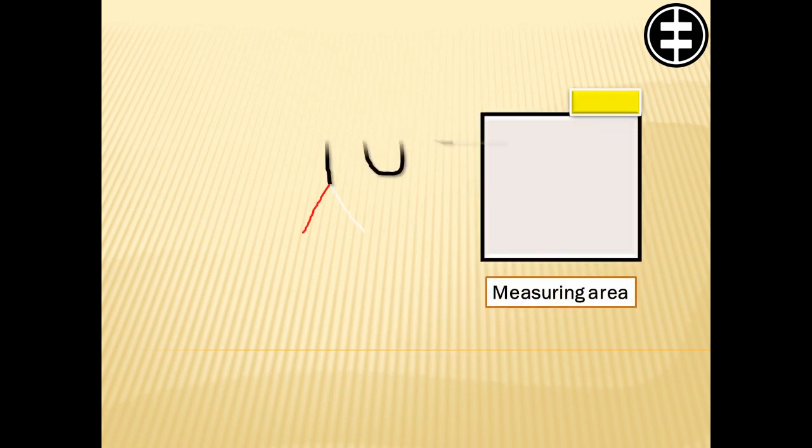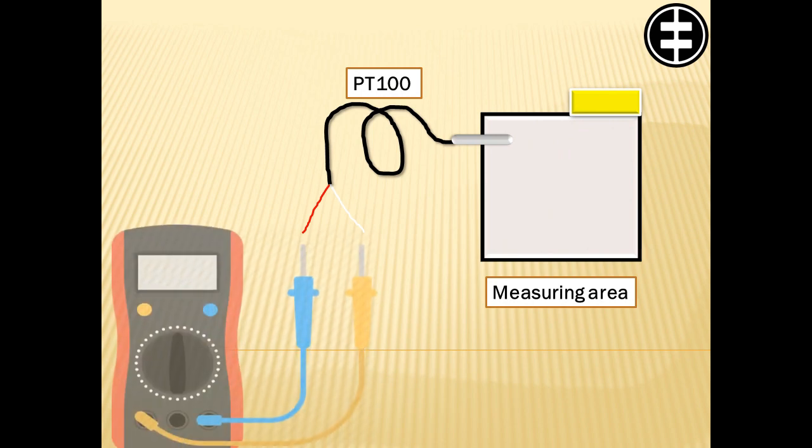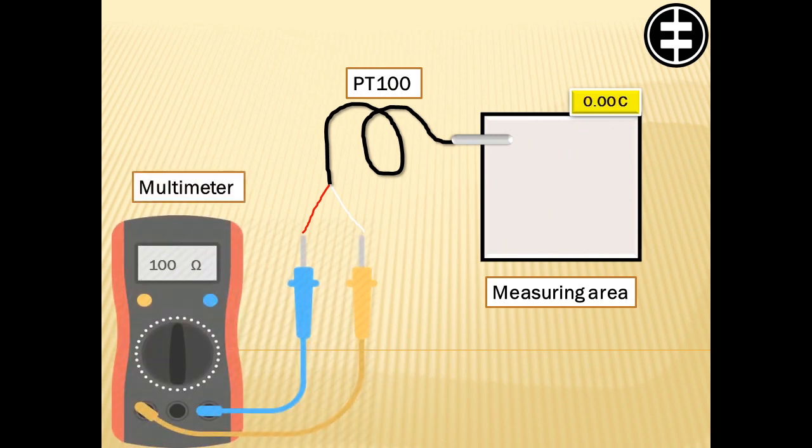Resistance variation is a function of temperature, 0.39 Ohm per 1 degree Celsius. Long term stability is the main difference compared to other temperature measuring methods.